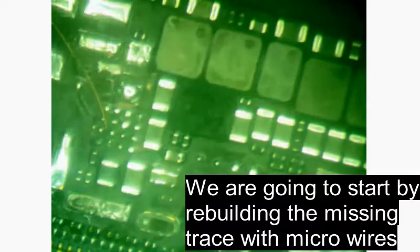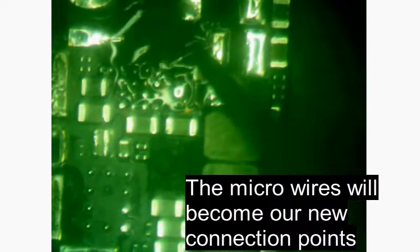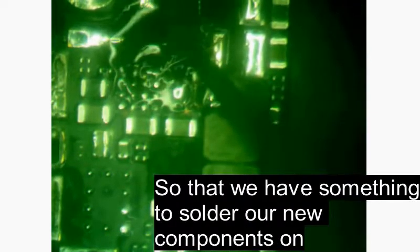So we're going to start by rebuilding the missing traces with microwires. The microwires will become our new connection points. These connection points will allow us to have something to solder our new components back onto the motherboard.